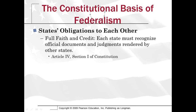Federalism also refers to the obligations states have to each other. There are three of these in the Constitution. The Full Faith and Credit Clause says that any official document from one state has to be recognized by another state. For example, if I get a driver's license in Texas, it has to be recognized by another state. Or if I take out a home loan in Texas and run away to New Mexico, the money I owe the bank is still valid even though it's a Texas document.